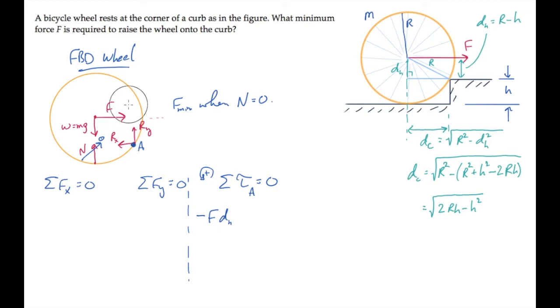The torque created by the weight has this R vector. Putting the right hand fingers in that direction and curling them down in the direction of the weight, we find the right hand thumb points out of the screen, that's the positive direction.